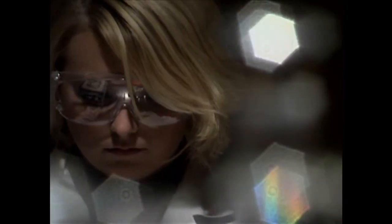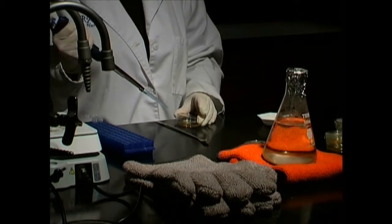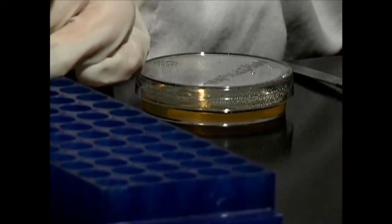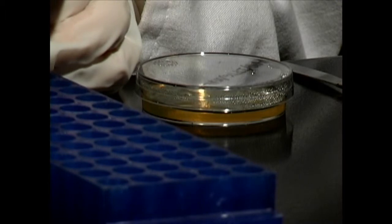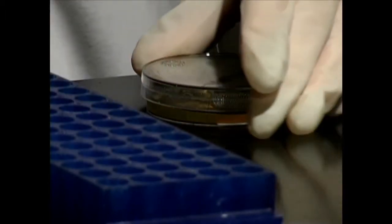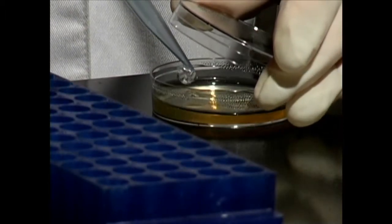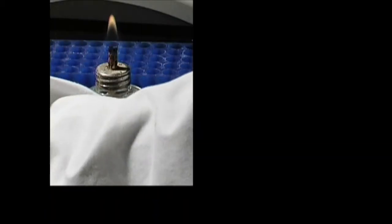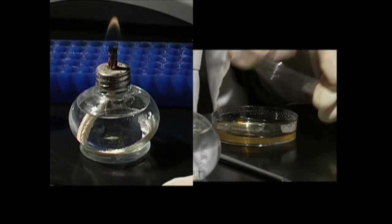Transfer the solution from the control tube to both control plates. Using a fresh, sterile pipette, do the same with the DNA solution. Using aseptic techniques, spread the cells across the plates with an inoculating loop.